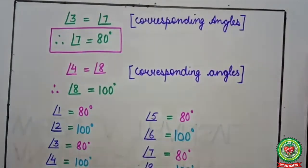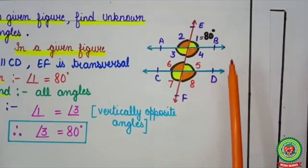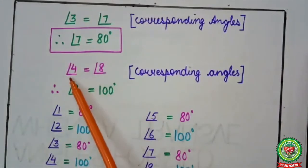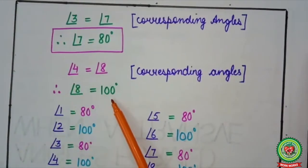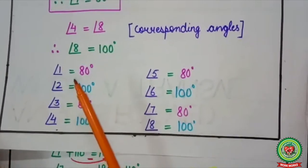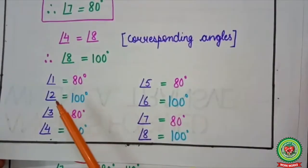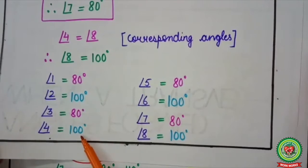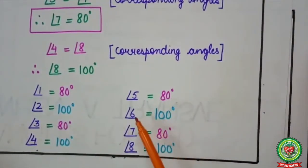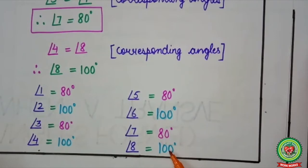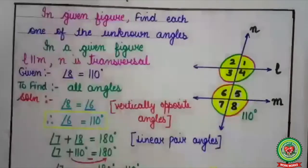Similarly, angle 4 and angle 8 are again an F shape, so these two are also corresponding angles. Therefore, angle 8 also equals 100 degrees. Now we have found out all the angles: angle 1 = 80°, angle 2 = 100°, angle 3 = 80°, angle 4 = 100°. Now let's see one more example.